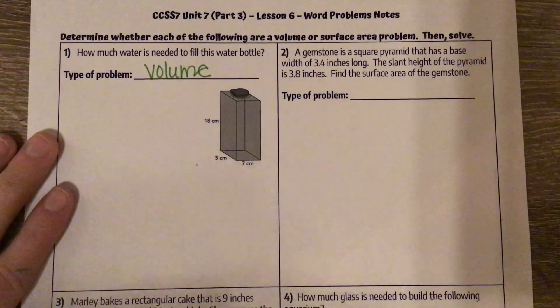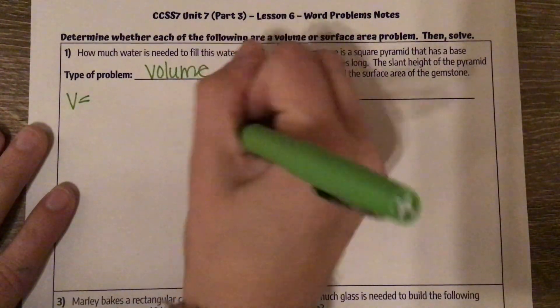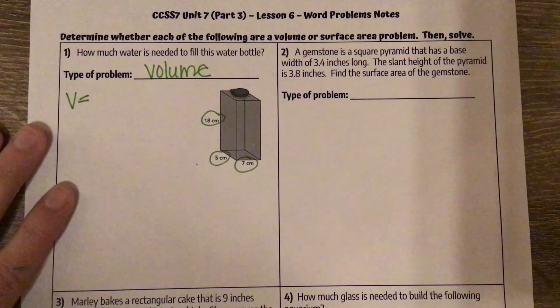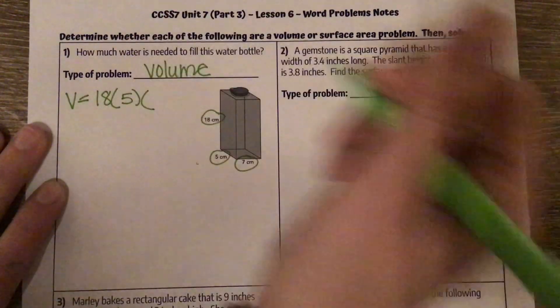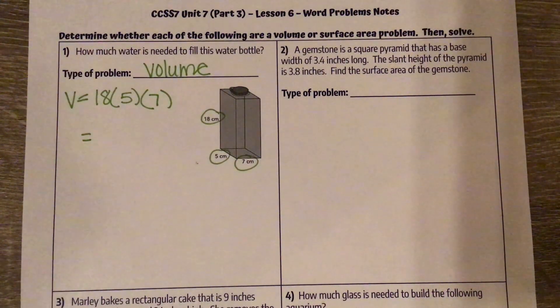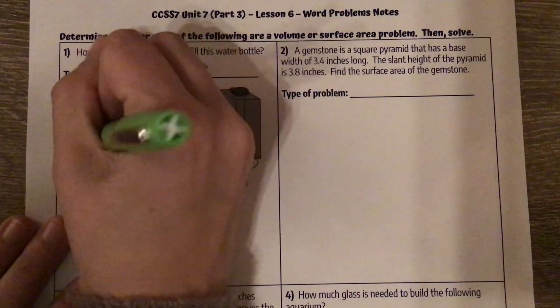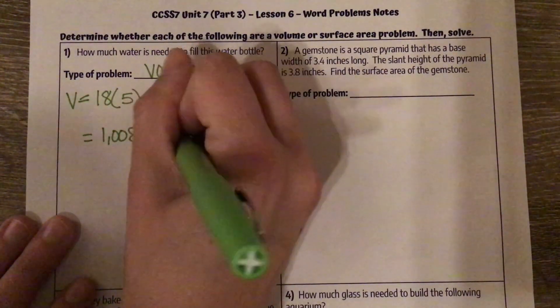We have a rectangular prism here, so our volume is just going to be multiplying our three measures together: 18 times 5 times 7. I'm going to plug that into my calculator and I get 1,008. Our units are centimeters cubed.